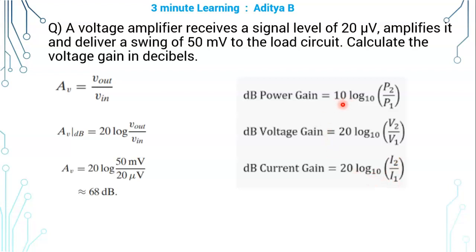But the important factor is, dB power gain is 10 log P2 by P1. It is not 20 log P2 by P1. So why is this so?